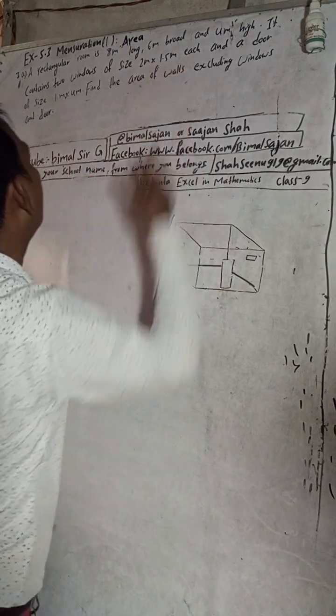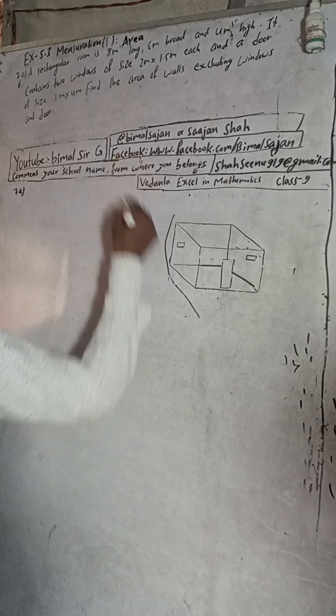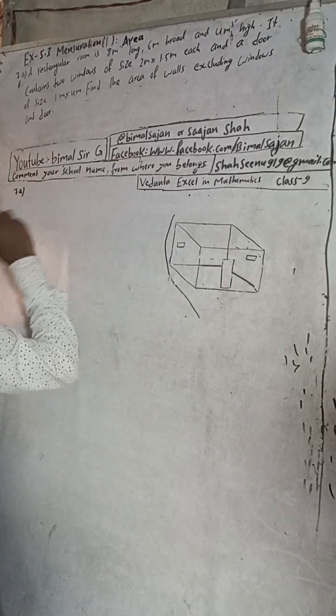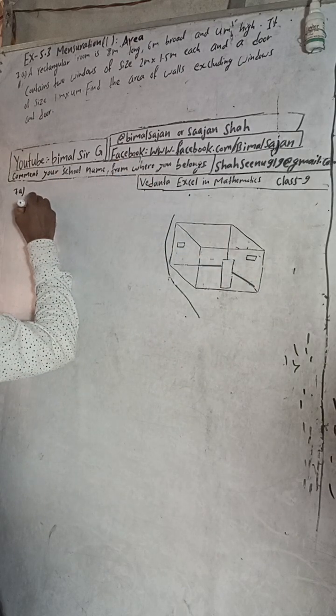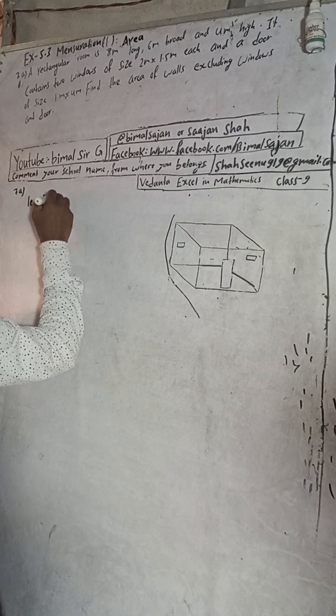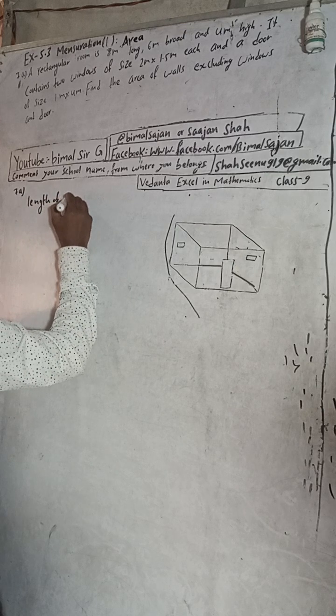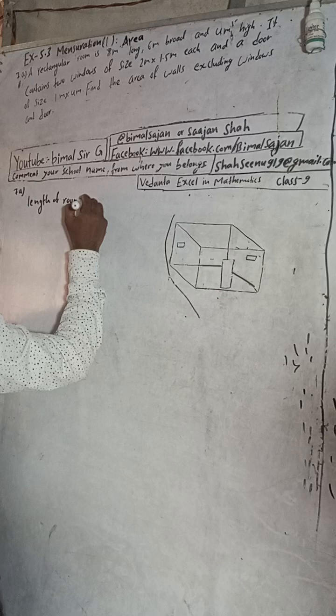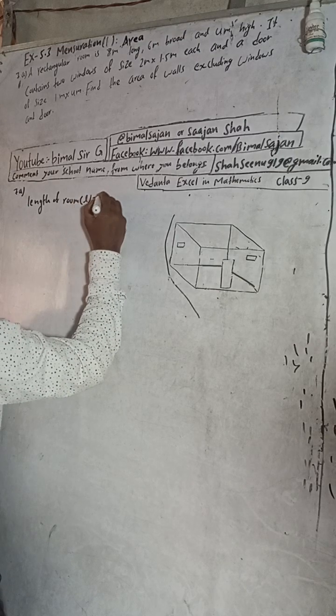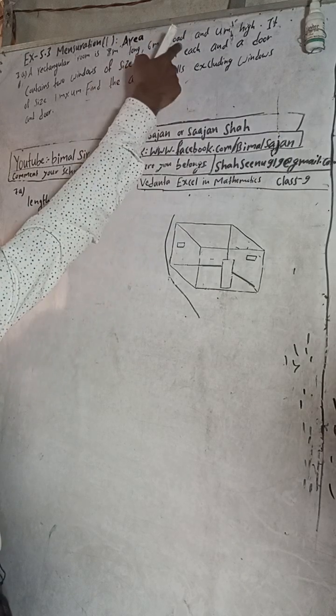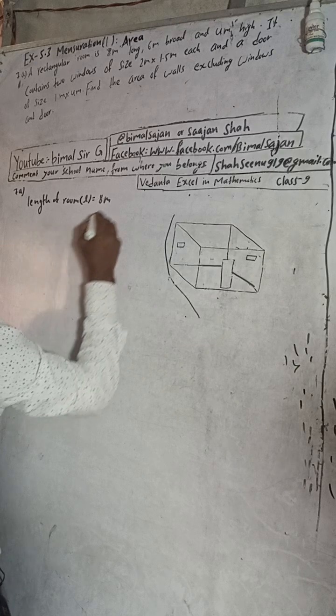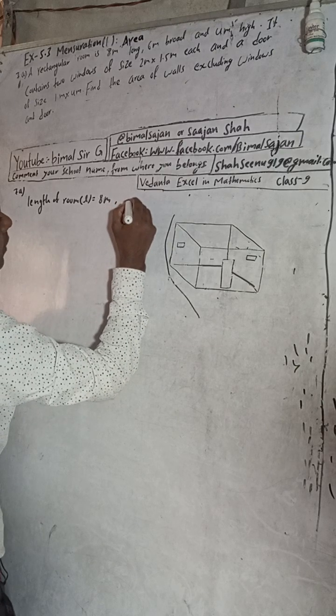Going to this question, rectangular room means here is given length of the room. Length of room L is equal to 8 meters. Broad means width, breadth of room is equal to 6 meters.